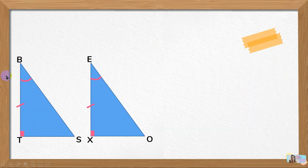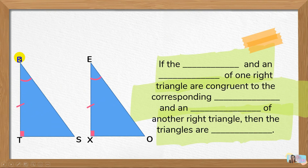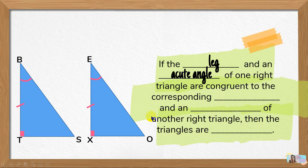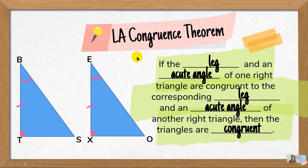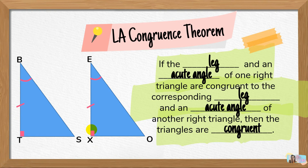For the last congruence theorem under the right triangle: we have angle B and angle E, which are the acute angles, and sides BT and EX which are congruent — those are the legs. So: if the leg and an acute angle of one right triangle are congruent to the corresponding leg and an acute angle of another right triangle, then the triangles are congruent. This is called the LA congruence theorem — leg and acute angle. So those are the four congruence theorems: LL, HYL, HYA, and LA.